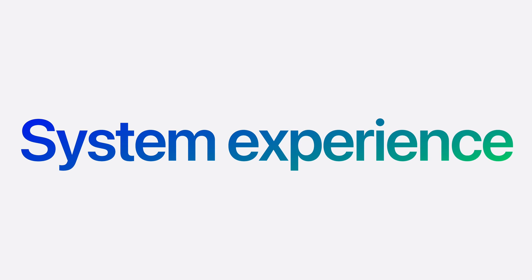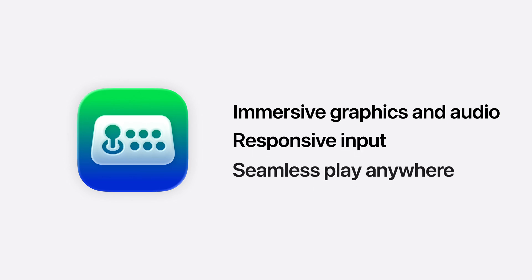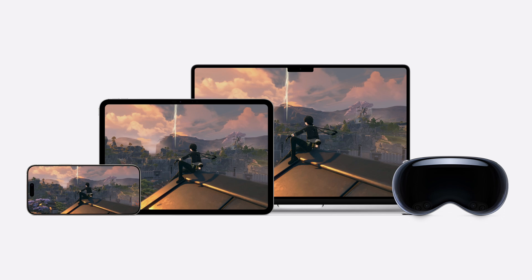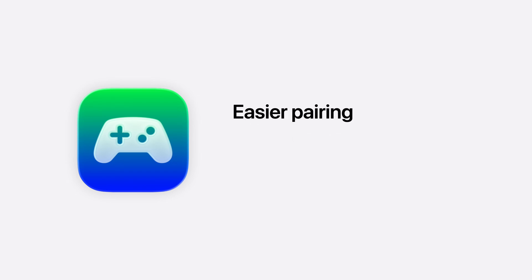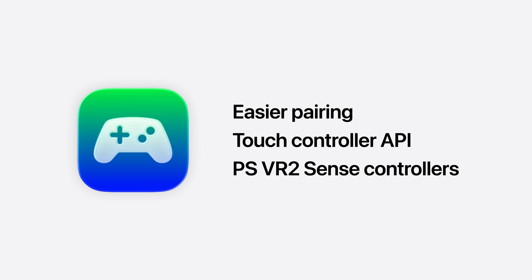Once you've got your game up and running, you can adopt powerful system frameworks to deliver immersive graphics and audio, incredibly responsive input, and a seamless gaming experience for your players. This year, the frameworks that power input across iPhone, iPad, Mac, and Vision Pro are getting major upgrades, with easier pairing for PlayStation DualSense controllers across all of your devices. A new touch controller API provides an easy way to add on-screen controls for iPhone and iPad, and you can enable powerful new ways to play games on your Vision Pro, with support for PlayStation VR 2 Sense controllers and up to three times faster hand tracking.